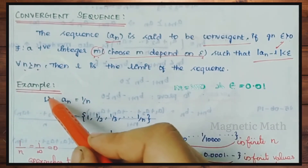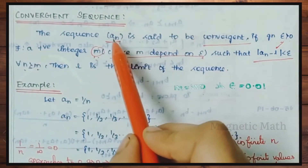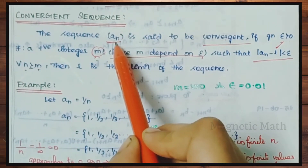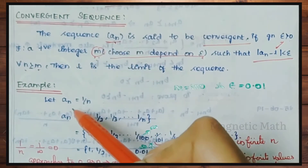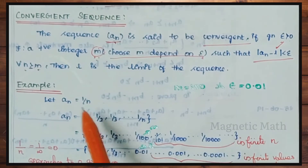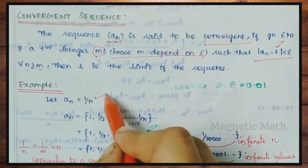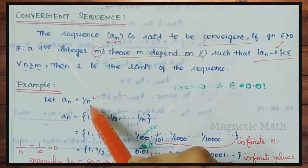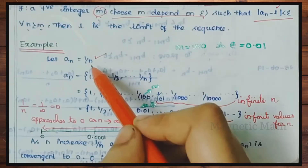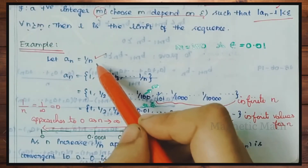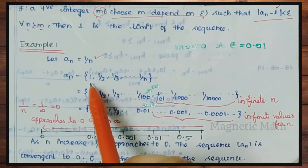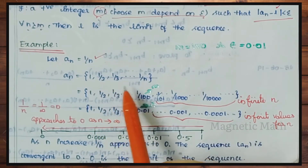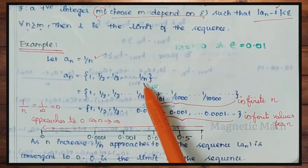So let's discuss an example. Let's say an equals 1 by n. So let's say 1 by n is convergent. For n equals 1, 2, 3, the values are 1 by 1, 1 by 2, 1 by 3, and so on — 1 by n. So 1 by n is convergent.